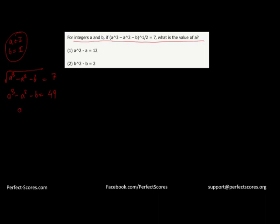Now the question is asking us the value of A. Nothing more can be concluded from this. So one thing we can easily do is take this as A² times (A - 1) minus B equals 49.